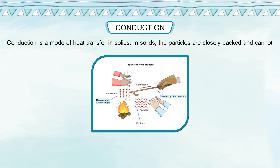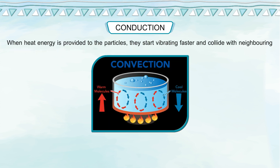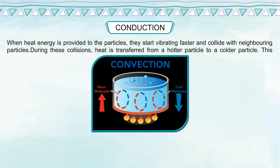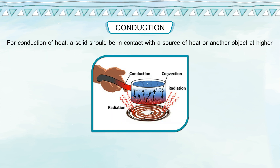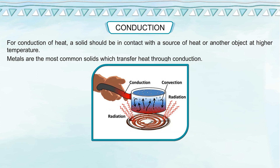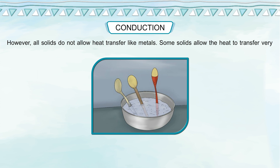Conduction is a mode of heat transfer in solids. In solids, the particles are closely packed and cannot leave their positions, but they can vibrate at their own positions. When heat energy is provided, they start vibrating faster and collide with neighbouring particles, transferring heat from a hotter particle to a colder particle. This process takes place rapidly and continuously until the whole solid heats up. For conduction of heat, a solid should be in contact with a source of heat or another object at higher temperature. However, all solids do not allow heat transfer like metals — some allow heat to transfer very slowly, while others do not transfer heat at all.